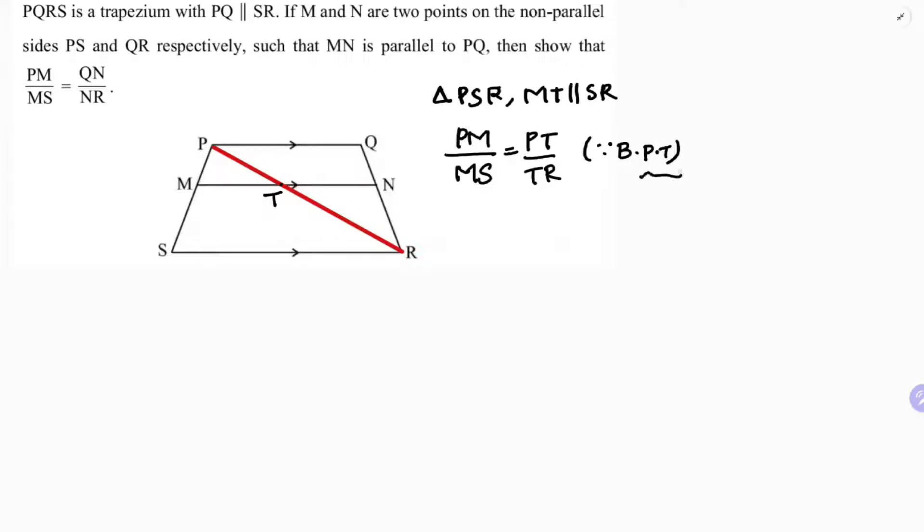Now I'll take another triangle PRQ. So here the triangle is PRQ and TN is parallel to PQ. This is parallel; before it was this one already there parallel. Now I'll apply BPT.